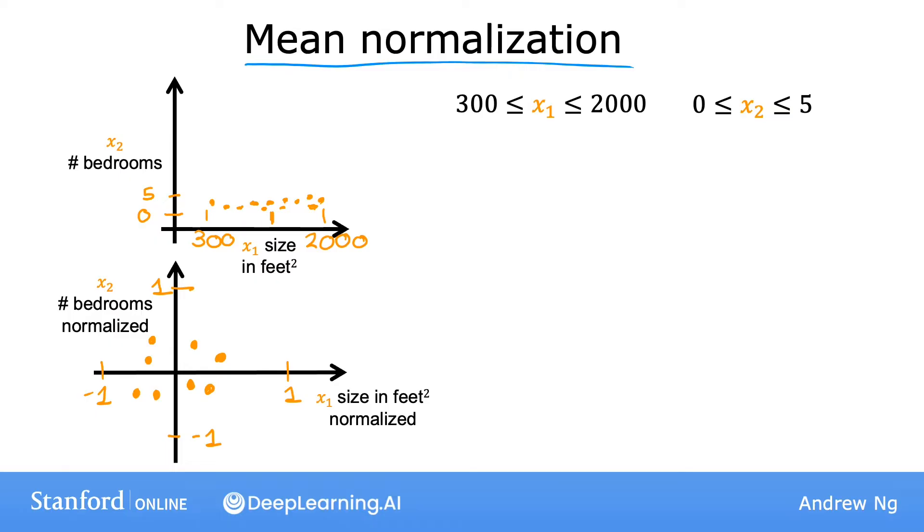So to calculate the mean normalization of x1, first find the average, also called the mean, of x1 on your training set, and let's call this mean mu1, with this being the Greek alphabet mu. For example, you may find that the average of feature 1, mu1, is 600 square feet. So let's take each x1, subtract the mean mu1, and then divide by the difference 2000 minus 300, where 2000 is the maximum and 300 the minimum. And if you do this, you get the normalized x1 to range from negative 0.18 to 0.82.